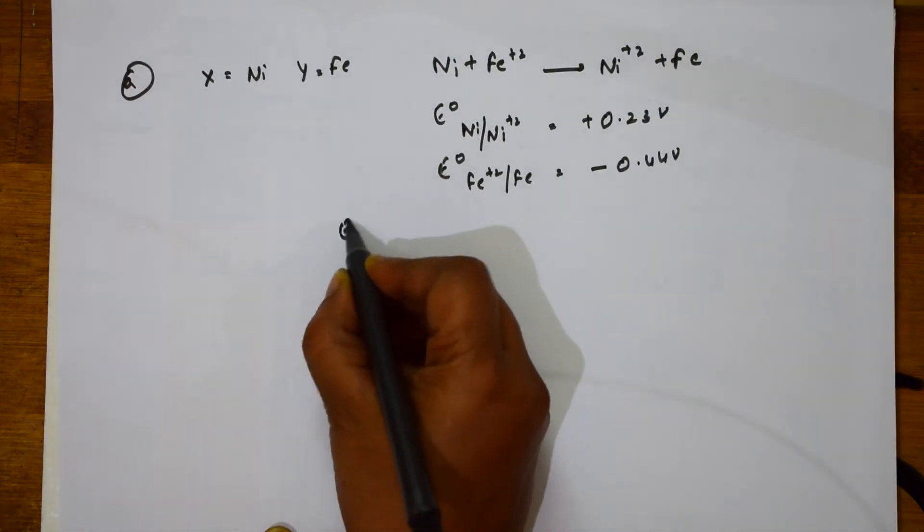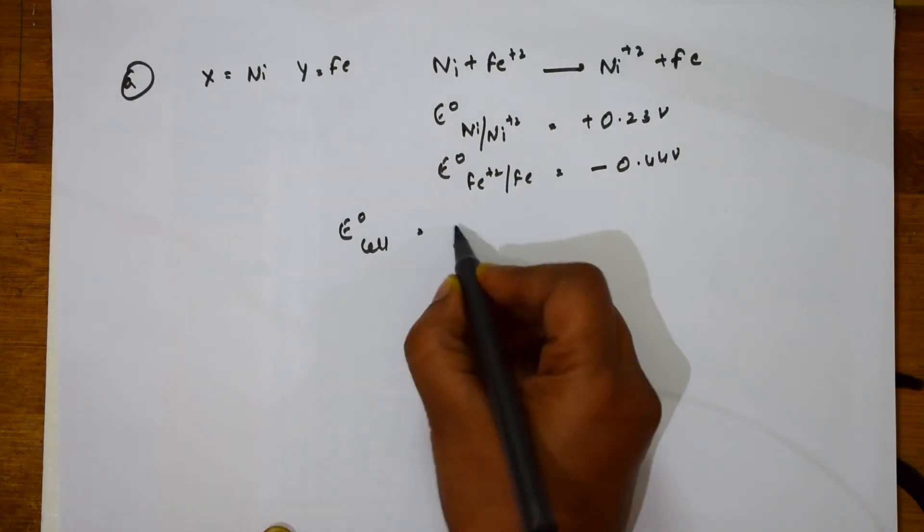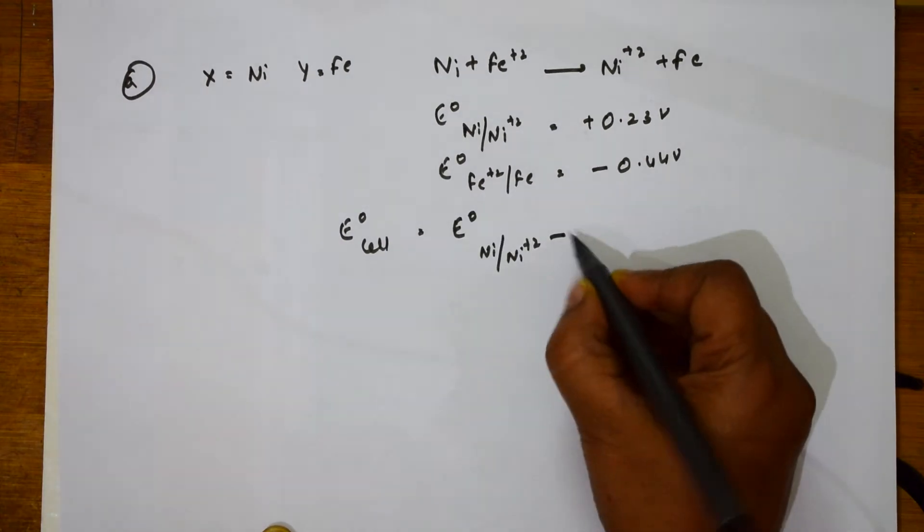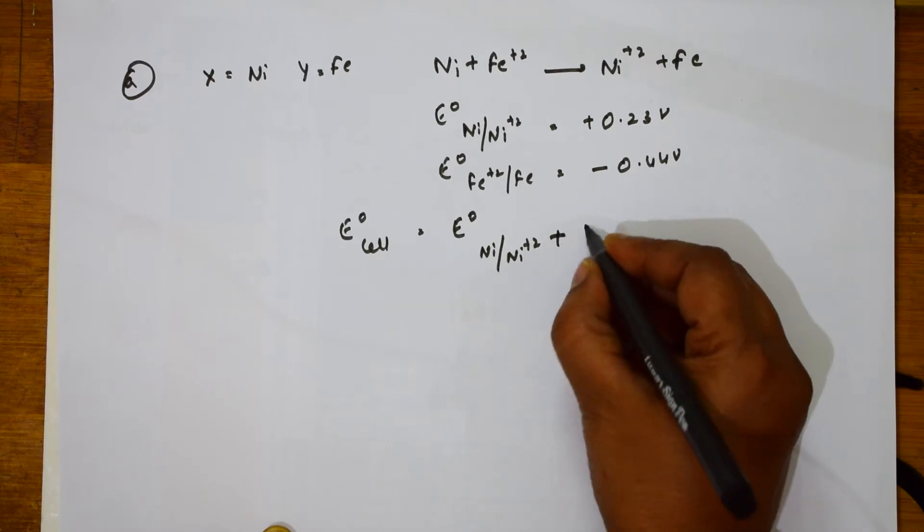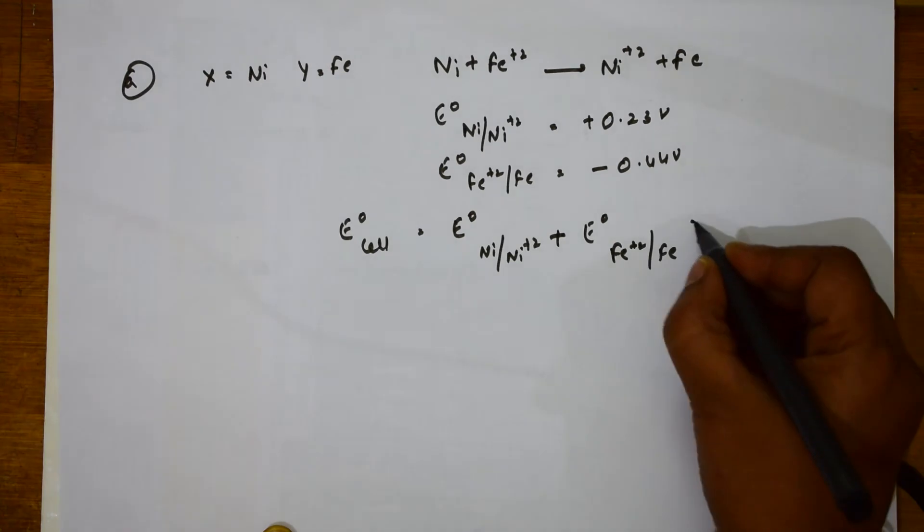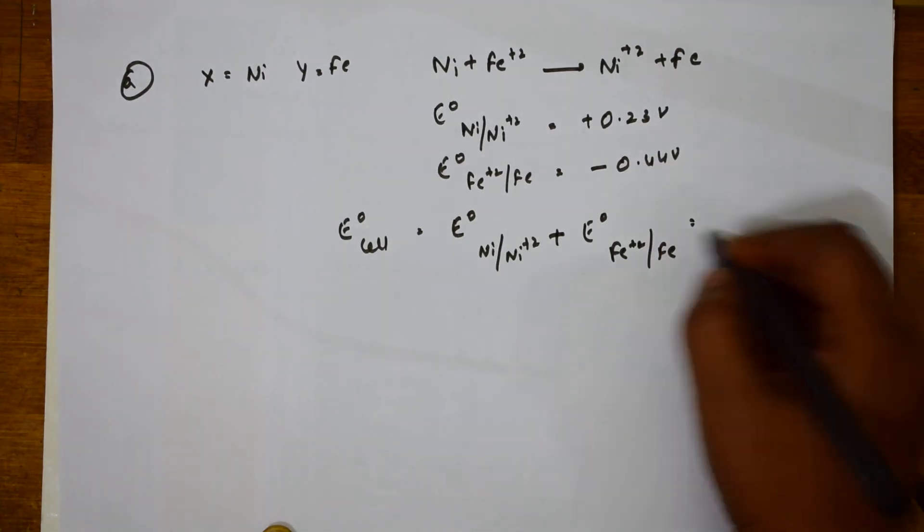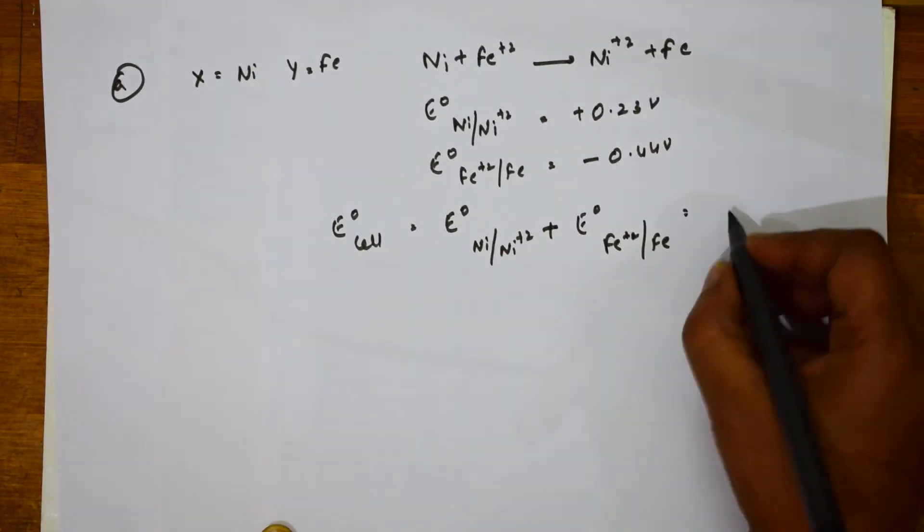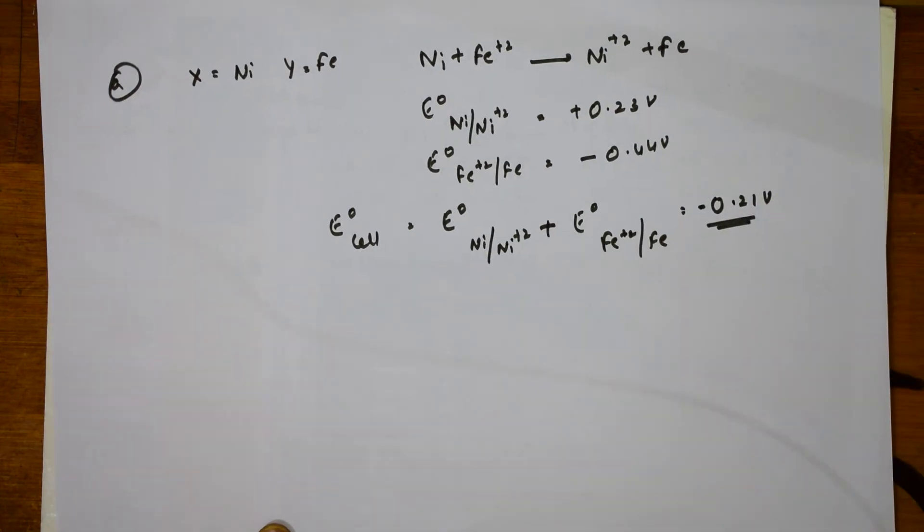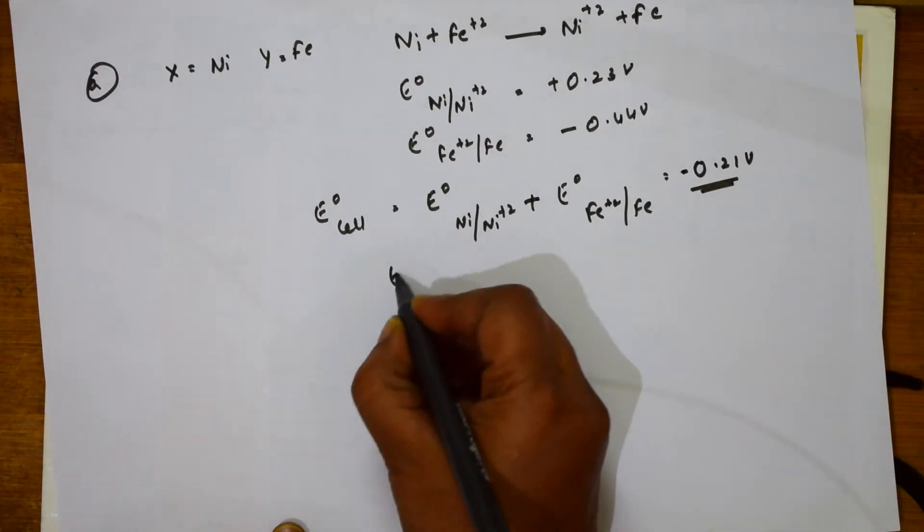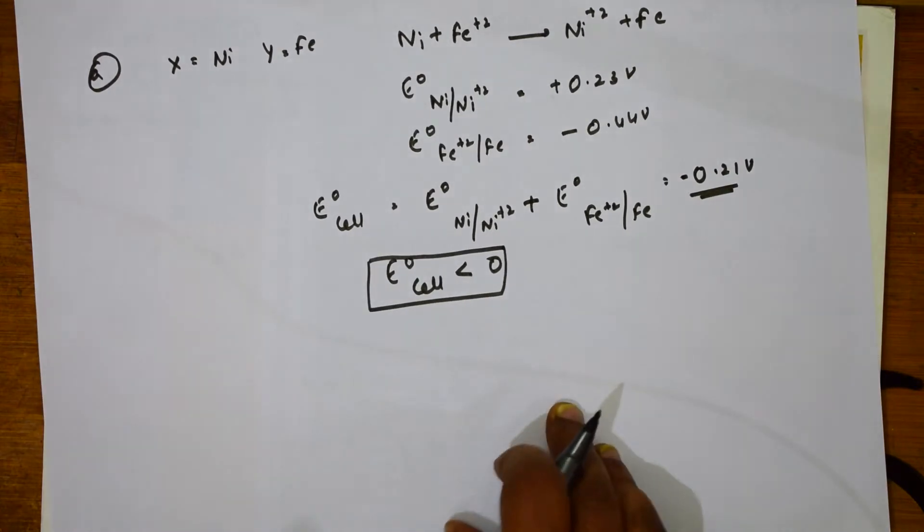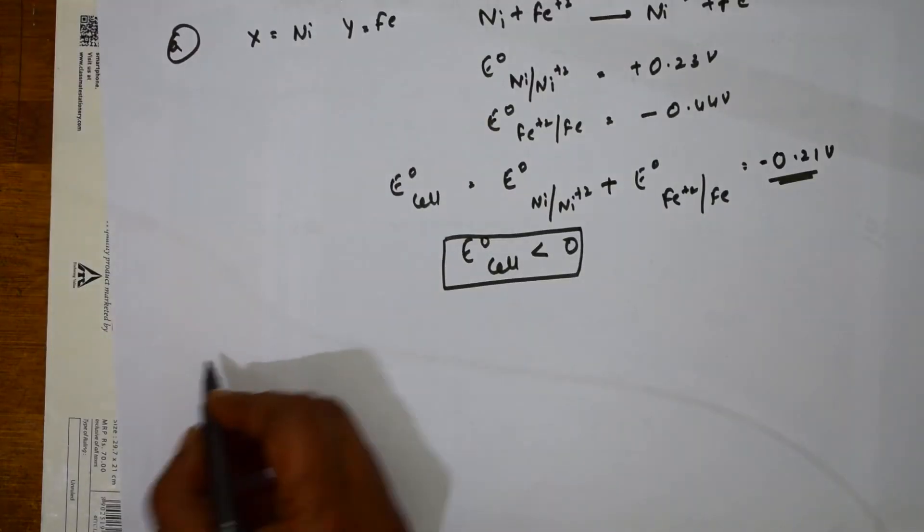They have already given me E naught of Ni/Ni²⁺ is plus 0.23. E naught for Fe²⁺/Fe is minus 0.44 volts. Now, use the formula. E naught cell is equal to E naught Ni/Ni²⁺ plus E naught by Fe²⁺/Fe. You get an answer. If you subtract these two, I mean add minus and plus, then you get an answer of minus 0.21 volts. E naught cell is less than 0, because it is in minus value less than 0.